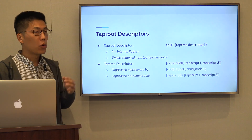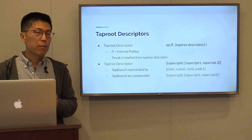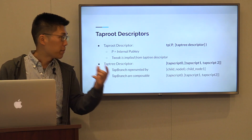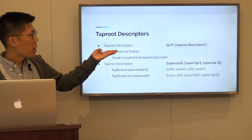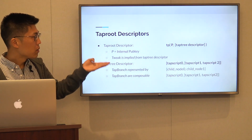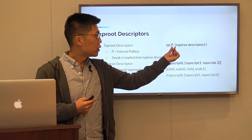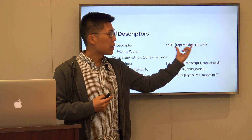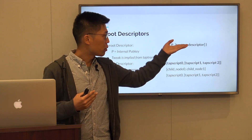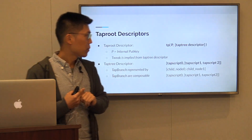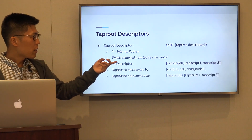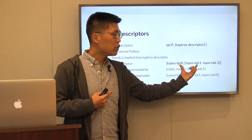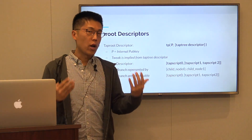We also have descriptors for an entire TAP root output. Before we looked at descriptors that were specific to the TAP script. In order to describe a TAP root, we need to have the internal key, but we also need to have a descriptor that describes the entire TAP tree. That's what we're showing here. A TAP tree descriptor consists of tuples, each tuple describing a node.